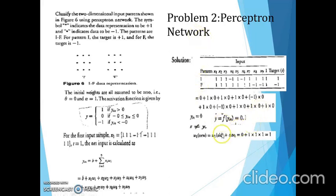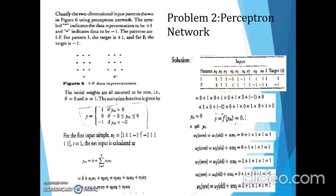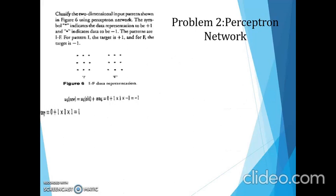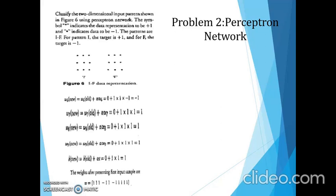This is the updated weight after handling the first sample. Now we consider the second sample (the 'f' sample). These updated weights become the old weights. Second sample x = [1,1,1,1,1,1,1,-1,-1], target = -1. Calculate net input: y_in = bias(1) + w1·x1 + ... = 2. The output will be 1 (greater than threshold 0). Calculated output (1) is not equal to target (-1), so we update the weight: w_new = w_old + α·t·xi. w1=0, w2=0, w3=0, w4=-2, w5=0, w6=-2, w7=0, w8=2, w9=2. Bias: 1 + 1·(-1) = 0.